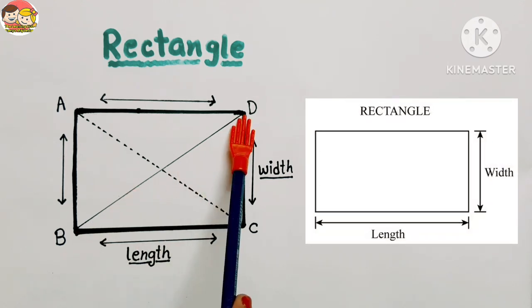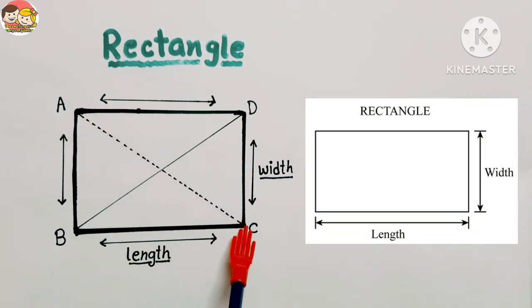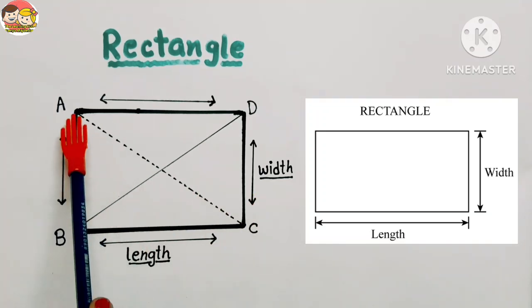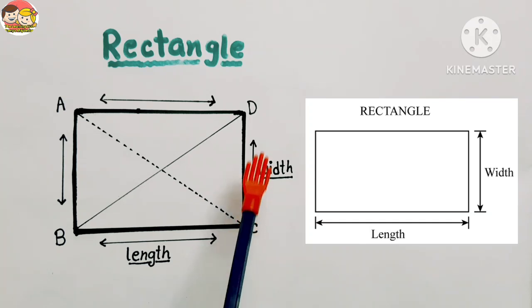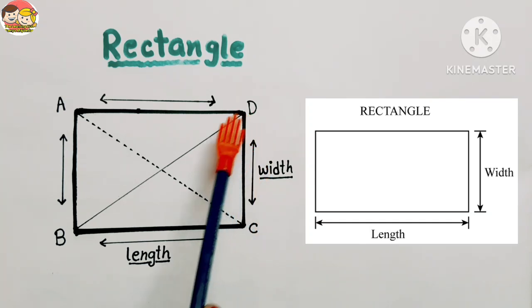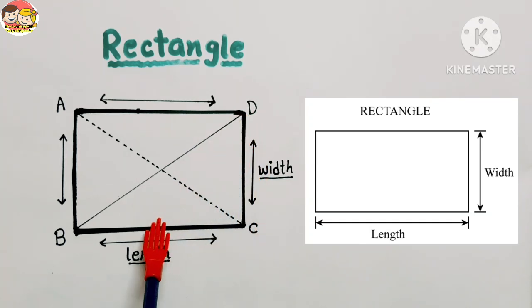A rectangle also has two diagonals: BD and AC. It has four vertices like A, B, C, and D. So this is a rectangle shape.